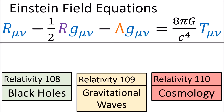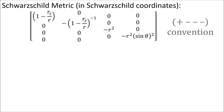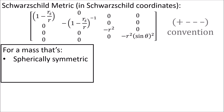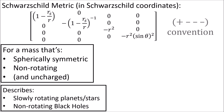If you like, you can skip this video and cover these sections in any order, but for the Relativity 108 videos, we're going to cover black holes using the Schwarzschild metric. The Schwarzschild metric is the spacetime metric for a spherically symmetric non-rotating mass that has no electric charge. It's useful for describing the curvature of spacetime near slowly rotating spherical bodies like planets and many stars, and also for describing spacetime curvature near non-rotating black holes.